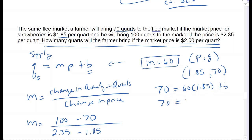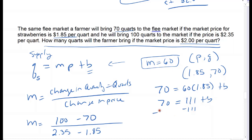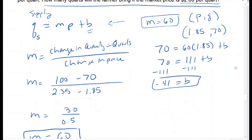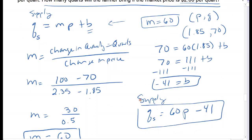So 70 equals 60 times $1.85, which is 111. Subtract 111 from both sides, and negative 41 is my y-intercept. My supply equation is: quantity supplied equals 60 times price minus 41.